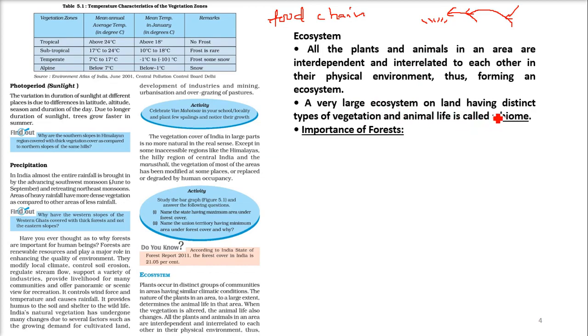A very large ecosystem on land with distinct different types of vegetation and animal life is known as a biome.